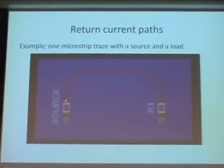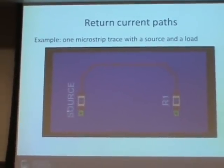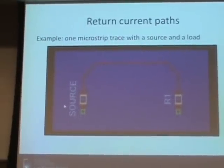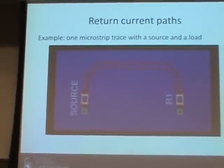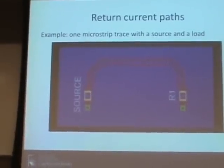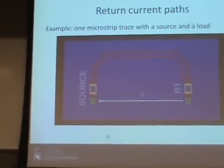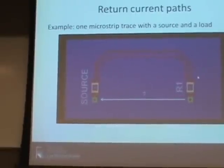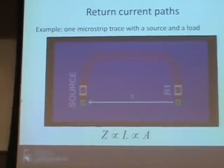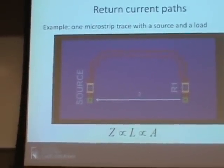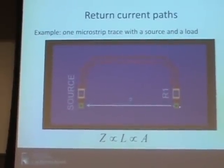A lot of our ability to get good high-speed design comes from keeping track of current return paths. Consider this example trace: a source and a resistive load, with the signal path confined to a red trace on the top layer and a large ground plane in blue on the bottom. The signal current flows along the red trace — but what about the return current? Circuits 101 says it takes the shortest, lowest-impedance path.